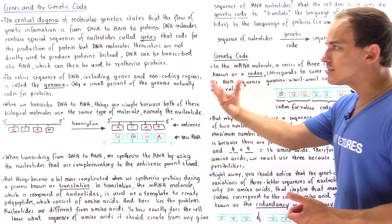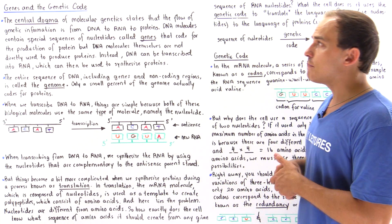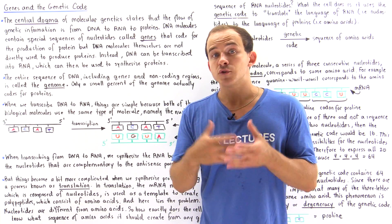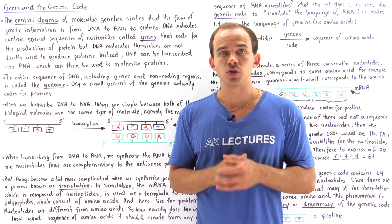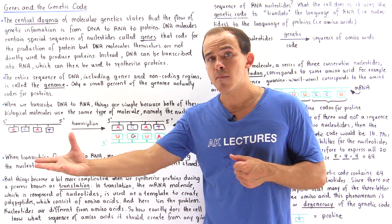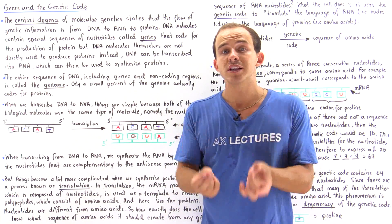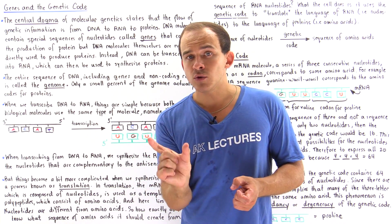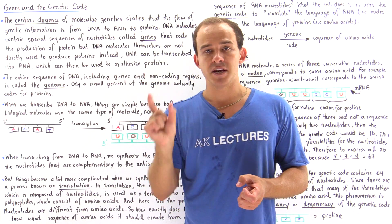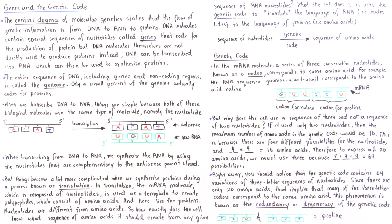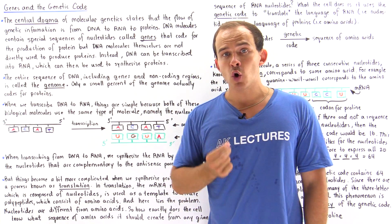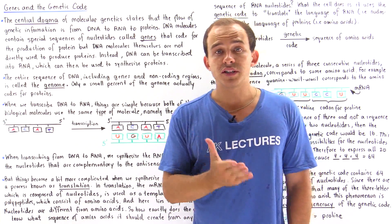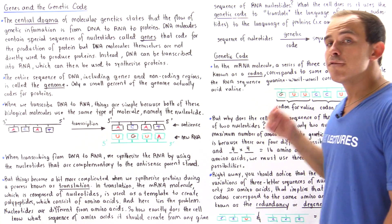All the codons in the genetic code can be looked up online or in a textbook. To summarize: during the process of translation, when we synthesize our proteins from mRNA molecules, the ribosomes use the genetic code — three-letter sequences known as codons that correspond to specific amino acids — to translate mRNA into protein. The genetic code is redundant or degenerate, meaning two or more different codons can correspond to the same amino acid, which makes sense because we have 64 possible codon combinations but only 20 amino acids.